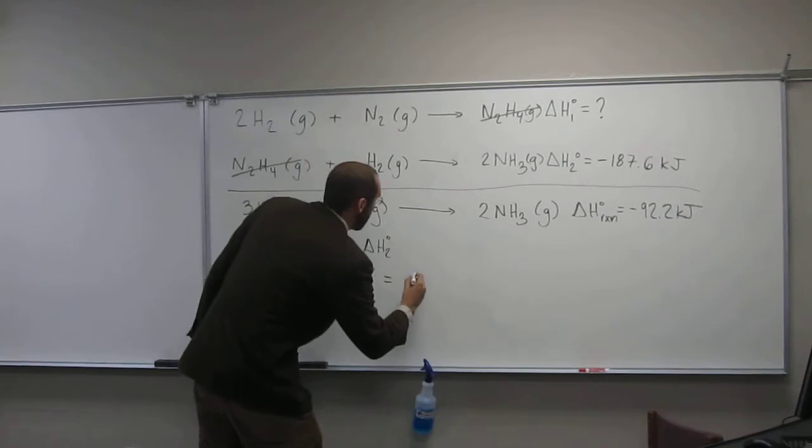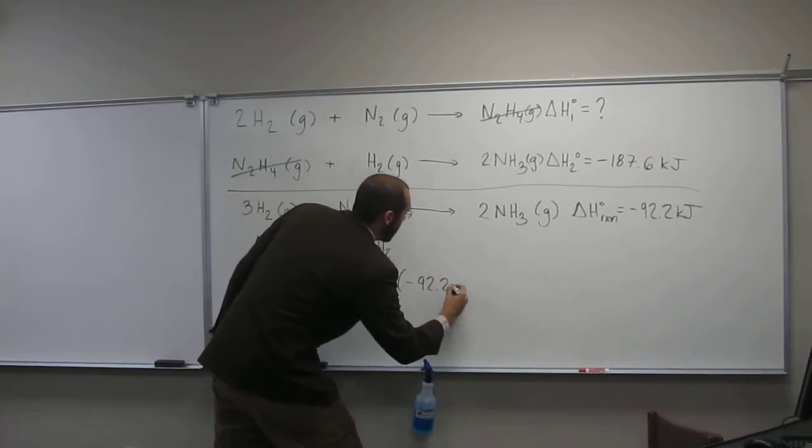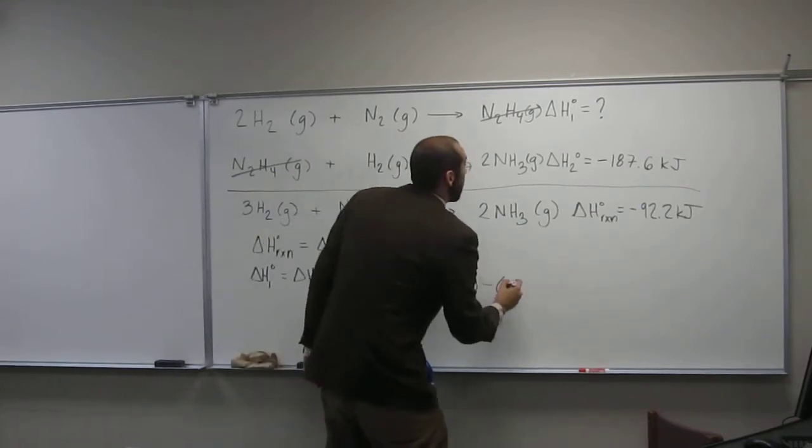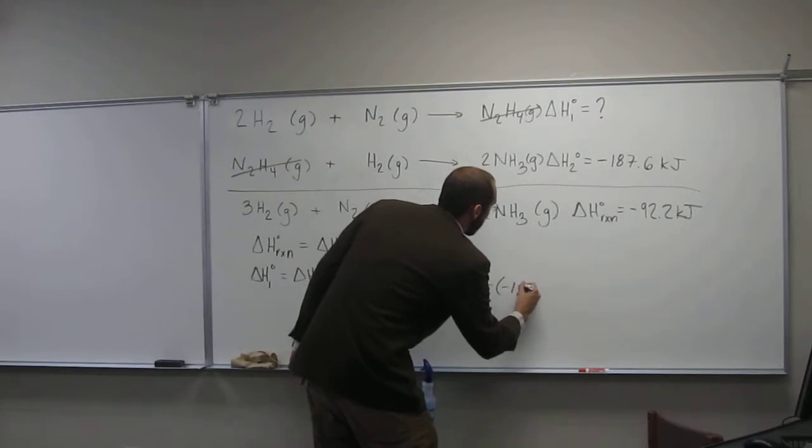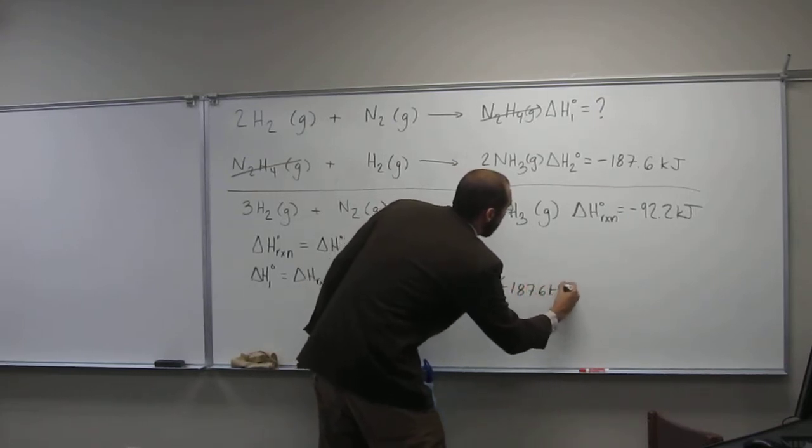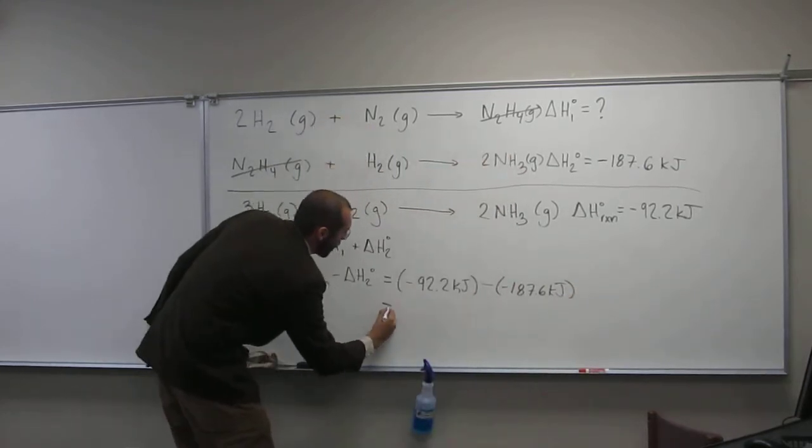So negative 92.2 kilojoules minus negative 187.6 kilojoules. So minus minus, that's a plus, right?